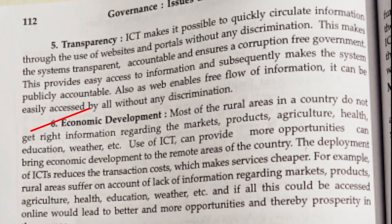The sixth benefit is economic development. In this system of government, all information relating to market, products, health, education, industries, and other economic affairs are circulated to the people and will reach remote areas. As a result, it will encourage agricultural, industrial, and other economic bodies to progress quickly. At any time they can share information, which will improve the economy of the country.